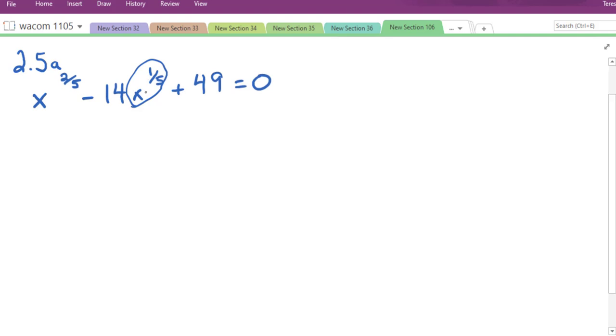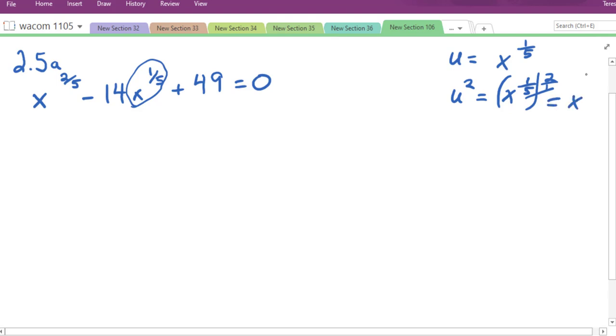So, we can use the u substitution. So we're going to let u equal, from our middle term, the variable part, x to the 1 fifth. So, u squared will be x to the 1 fifth squared, which would be power to a power. So, you're going to multiply on the exponents. So this would give you x to the 2 over 5, which is what we want.